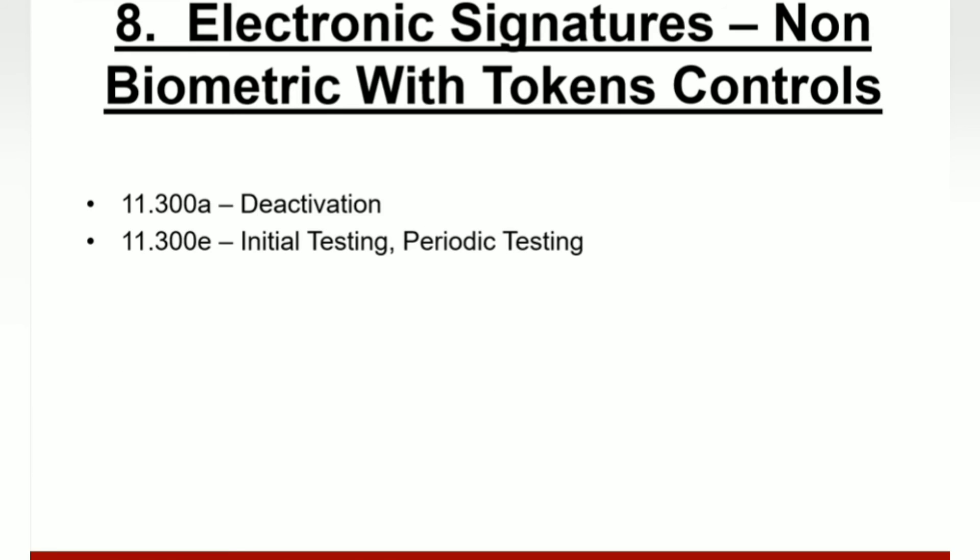Section eight applies when the system uses non-biometric electronic signatures with tokens; you complete sections four and five plus this section. For 11.300A, a procedure directing action to electronically deauthorize lost, stolen, missing, or otherwise potentially compromised tokens, cards, and other devices used to carry or generate electronic signature components, and for managing temporary or permanent token or card replacements, must exist. For 11.300E, a procedure addressing the initial and periodic testing of devices such as tokens or cards that bear or generate ID codes or password information must exist, including checking for proper functioning, performance degradation, and possible unauthorized use.